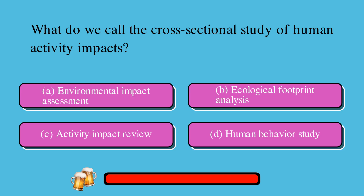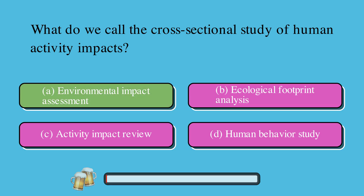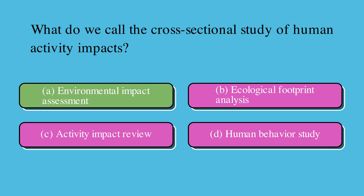What do we call the cross-sectional study of human activity impacts? A. Environmental impact assessment, B. Ecological footprint analysis, C. Activity impact review, or D. Human behavior study? The correct answer is A. Environmental impact assessment.